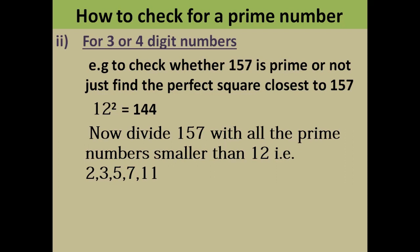You just have to check for these five numbers only. 157 is not divisible by 2 or 5, and then you check 3, 7, and 11. If none of them divide it, then you can be very sure it is a prime number. So you can use these two methods to check for prime numbers.